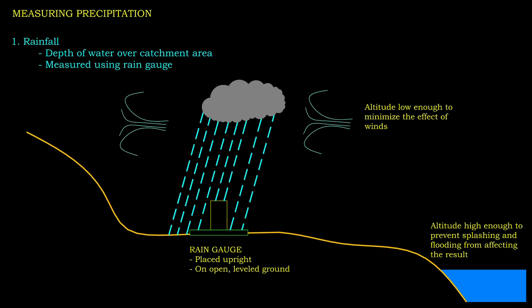Quantitatively, rainfall is expressed as the depth of water over the target catchment area. The device we use to measure rainfall is called a rain gauge. It basically consists of an open cylindrical vessel that catches the rain.